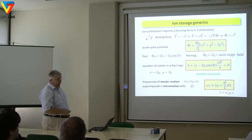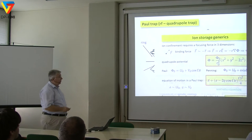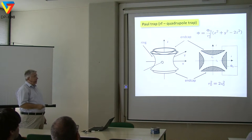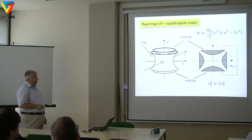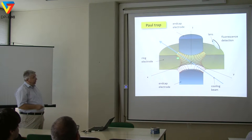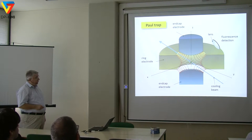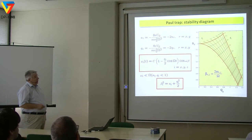This is how it looks generically — hyperboloid ring and end-cap electrodes with the ion residing in the center. You apply a laser diagonally through it, use fluorescence, and the ions reside in the center. The Paul trap has a stability diagram — it only works for certain values of the DC voltage (parameter A) and AC voltage (parameter Q). We usually operate here near the center where A is close to zero.